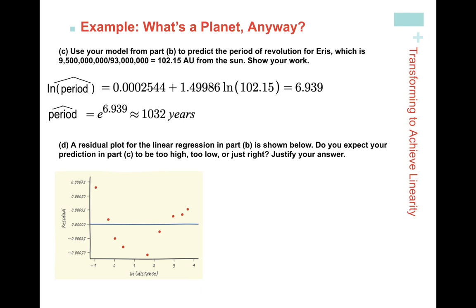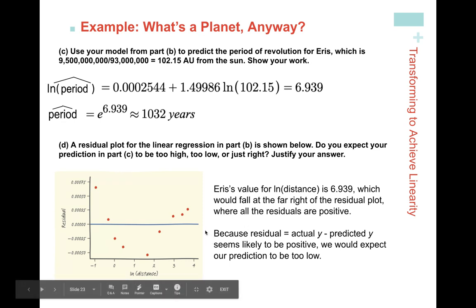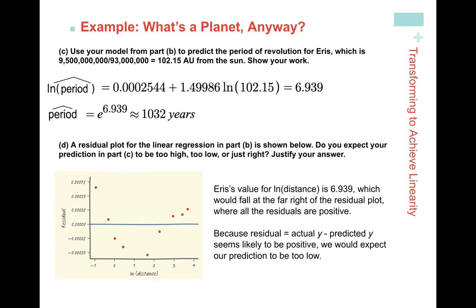Looking at the residual plot, Eris' value of ln(distance) = 6.939 would fall at the far right of the plot, well beyond the range shown (which only goes to about 4). All residuals on the far right side are positive. Since residual = actual y − predicted y, a positive residual means the actual period is greater than the predicted period — so we expect our prediction of 1,032 years to be too low.